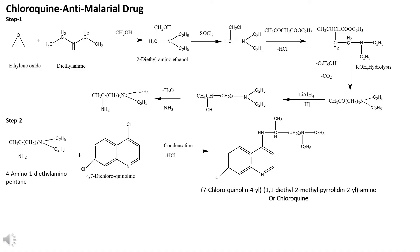Let's start with the synthesis of anti-malarial drugs. The first drug is chloroquine. The synthesis of chloroquine takes place in two steps. In step 1, the reactants are ethylene oxide and diethylamine, and the end product is 4-amino-1-diethylaminopentane. In step 2, there is a fusion of 4-amino-1-diethylamine and 4,7-dichloroquine; one molecule of HCl is eliminated to form the final product, chloroquine.